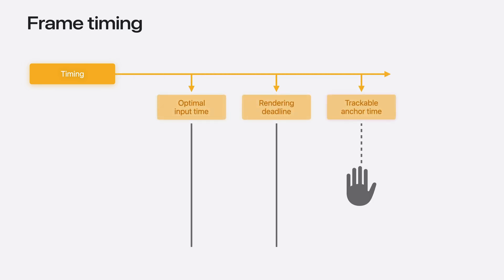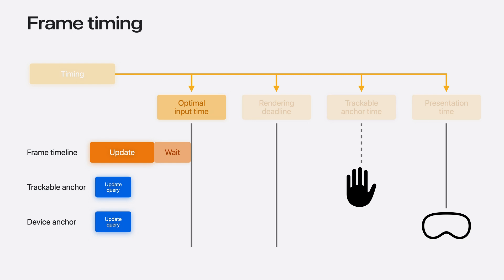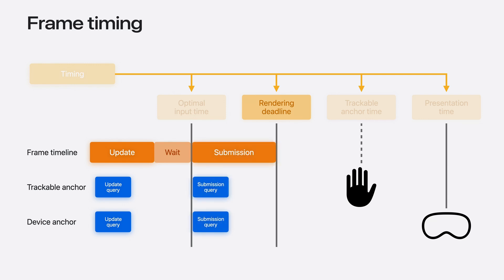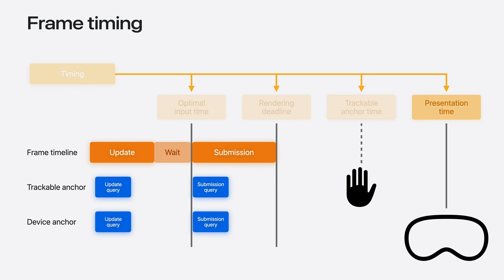This diagram defines how timing affects the different frame sections. There are four timings you can obtain from Compositor Services. Optimal input time is the time by which your app will finish non-critical tasks like interaction and physics simulations. At the beginning of the update stage, the app queries both the trackable anchor and the device anchor. Just after that optimal input time is the best time to query the latency-critical input and start rendering your frame. The rendering deadline is the time by which your CPU and GPU work to render a frame should be finished. Trackable anchor time is when the cameras see the surroundings — for trackable anchors, this time should be utilized for anchor prediction. Lastly, presentation time is when your frame will be presented on display — this time should be used for your device anchor prediction.